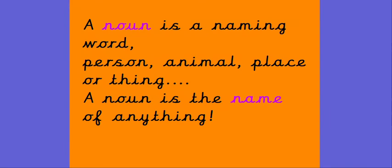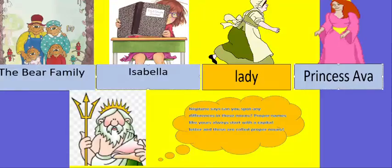A noun is a naming word — person, animal, place or thing. A noun is the name of anything. Let's break the song down now and listen to each section carefully. A noun is a naming word. Person. So these type of words are the names of real people or the name of characters in a story.